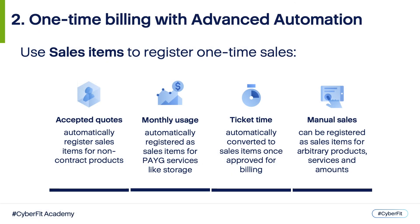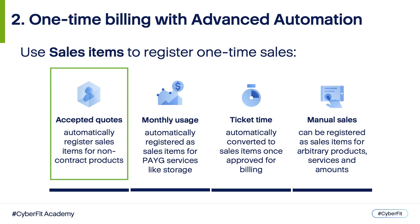To register one-time sales and charge your clients, use sales items in Advanced Automation. Sales items can be registered automatically or manually and reflect a client that will be charged for one or multiple included products or services, the agreed price, and quantity. In Advanced Automation, you'll work with one-time charges or sales items typically coming from the following sources. Accepted Quotes: if your client accepts a quote, contract products such as subscriptions will automatically be converted to contract items, but other products such as perpetual licenses or hardware sales will be converted to sales items.